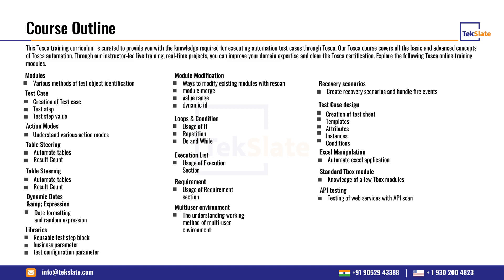The curriculum covered would start with modules. In modules, we will see how various methods of test object identification work — the main four methods being identifying by properties, by an anchor, by an index, and by an image. We will also look into which properties are dynamic, which are static, and which to include when selecting a unique method. We will also look into which engines are used for steering these modules, and what properties should be considered after saving the modules.